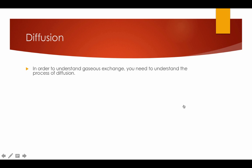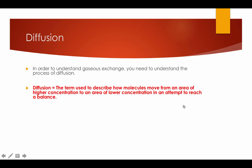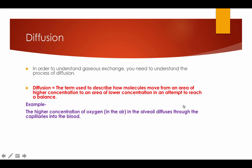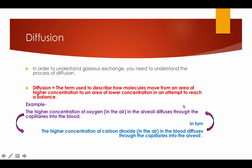Diffusion. In order to understand gaseous exchange, you need to understand the process of diffusion. Diffusion is the term used to describe how molecules move from an area of higher concentration to an area of lower concentration in an attempt to reach a balance. An example of this is the higher concentration of oxygen in the alveoli diffusing through the capillaries into the blood. In turn, the higher concentration of carbon dioxide in the blood diffuses through the capillaries into the alveoli.